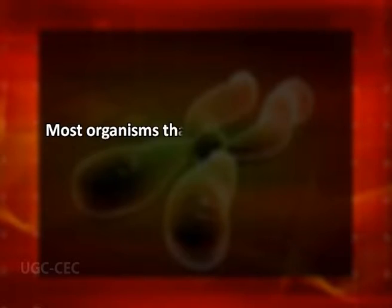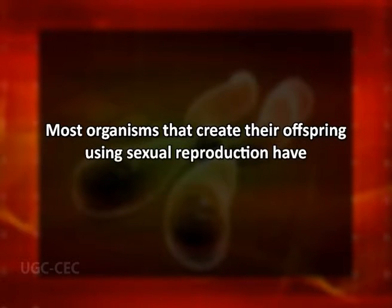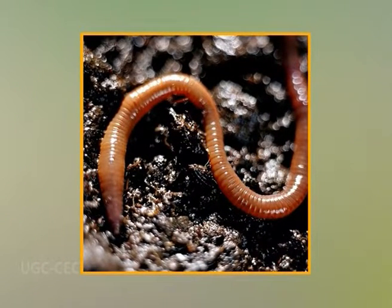A sex determination system is a biological system that determines the development of sexual characteristics in an organism. Most organisms that create their offspring using sexual reproduction have two sexes. Occasionally, there are hermaphrodites in place of one or both sexes. There are also some species that are only one sex due to parthenogenesis, the act of a female reproducing without fertilization. In many species, sex determination is genetic — males and females have different alleles or even different genes that specify their sexual morphology.